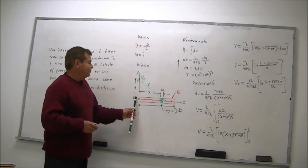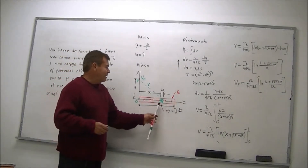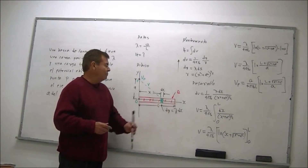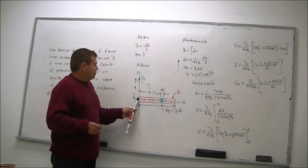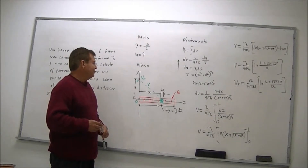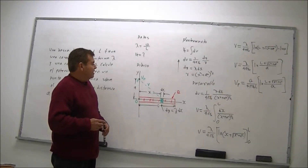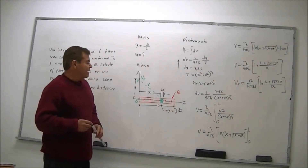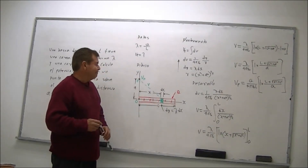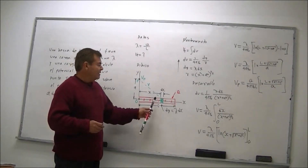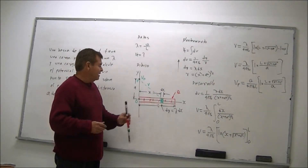Aquí tenemos el dibujo. Tenemos un sistema de ejes coordenados Y y X. La barra se encuentra sobre el eje X, tiene una carga total Q y una densidad de carga lambda. Nos están pidiendo encontrar el potencial en el punto P sobre el eje Y, a una distancia A del origen. Escogemos una cantidad de carga diferencial dQ que nos va a crear el potencial en el punto P, y esa carga diferencial dQ se encuentra en una longitud diferencial dX que está separada a una distancia X del origen.